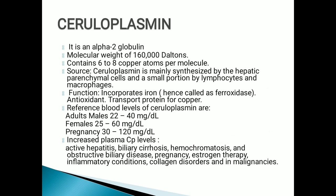Ceruloplasmin is an alpha-2 globulin that is blue in color as it contains six to eight copper atoms per molecule. It is synthesized by hepatic parenchyma, lymphocytes, and macrophages. Its functions include incorporating iron into transferrin; it is also an antioxidant because it scavenges free radicals involving copper and iron, and it is used for their transport.